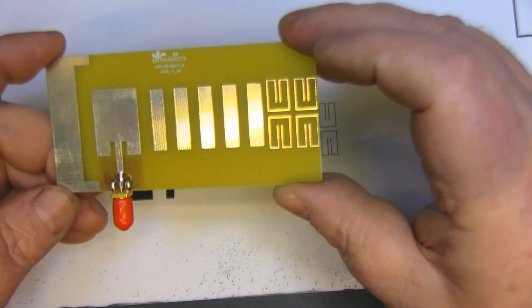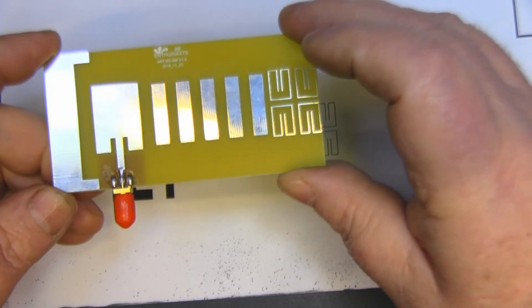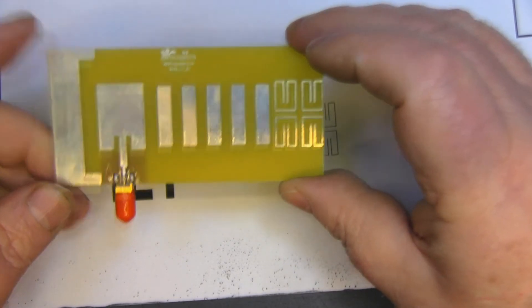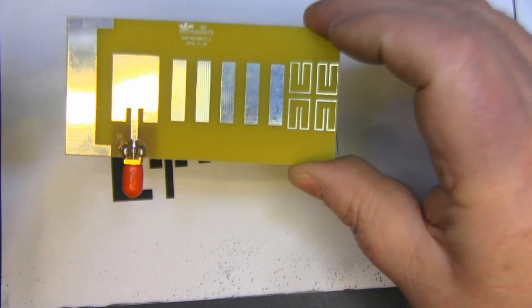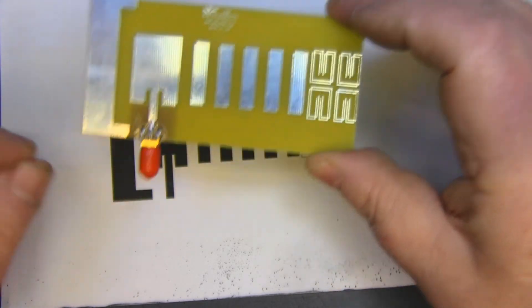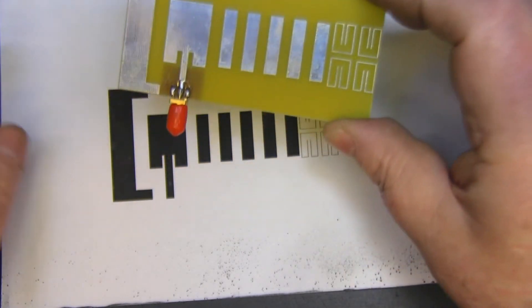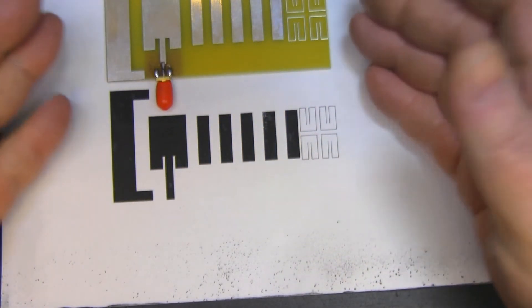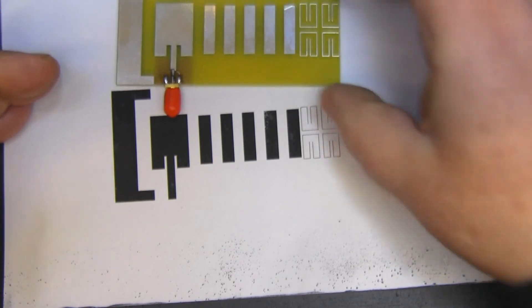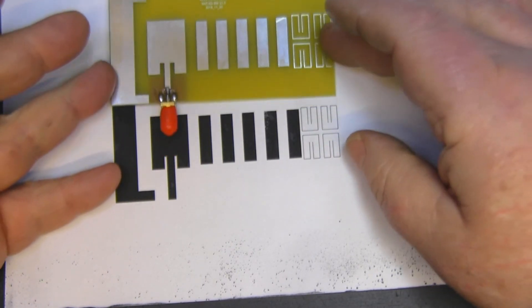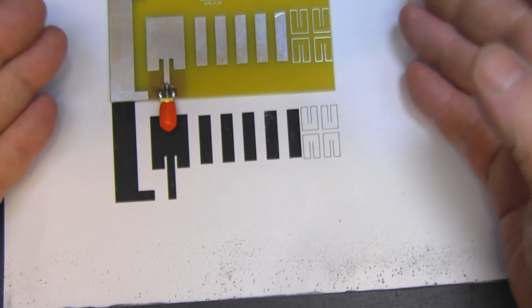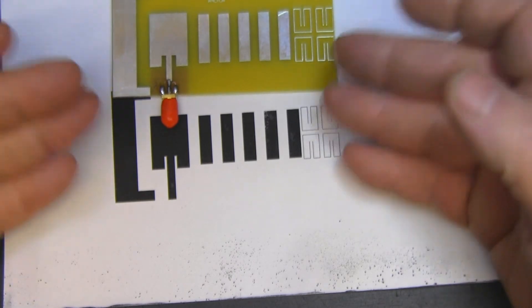I would definitely not pay the 20 pounds plus that some of the sellers are asking for this, and also on eBay at the minute there's a seller asking 30 pounds for one of these. But if you can pick one up for around eight pounds just to have a play around with, it's certainly a nice little Yagi to have with your RF setup.